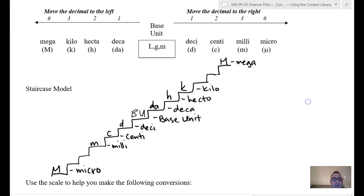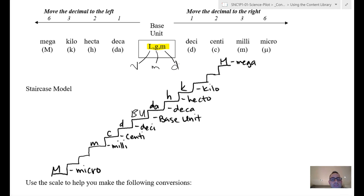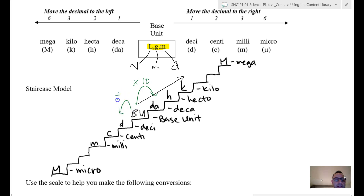We'll take a look at these stairs here and go through this quickly. The metric system has a base unit — whatever unit of measurement you're dealing with. If I'm measuring volume, I'll deal with liters. If I'm measuring mass, I'll deal with grams or kilograms. If I'm dealing with distance, I'll deal with meters. This whole system is based on units of 10 — going up the stairs, each step is 10 times larger; going down, 10 times smaller.